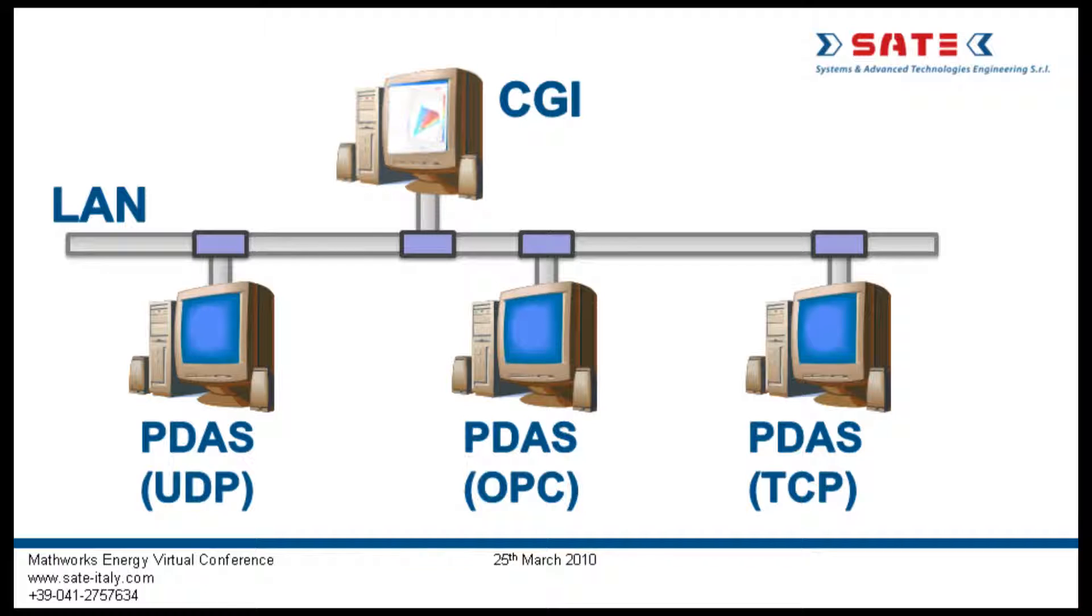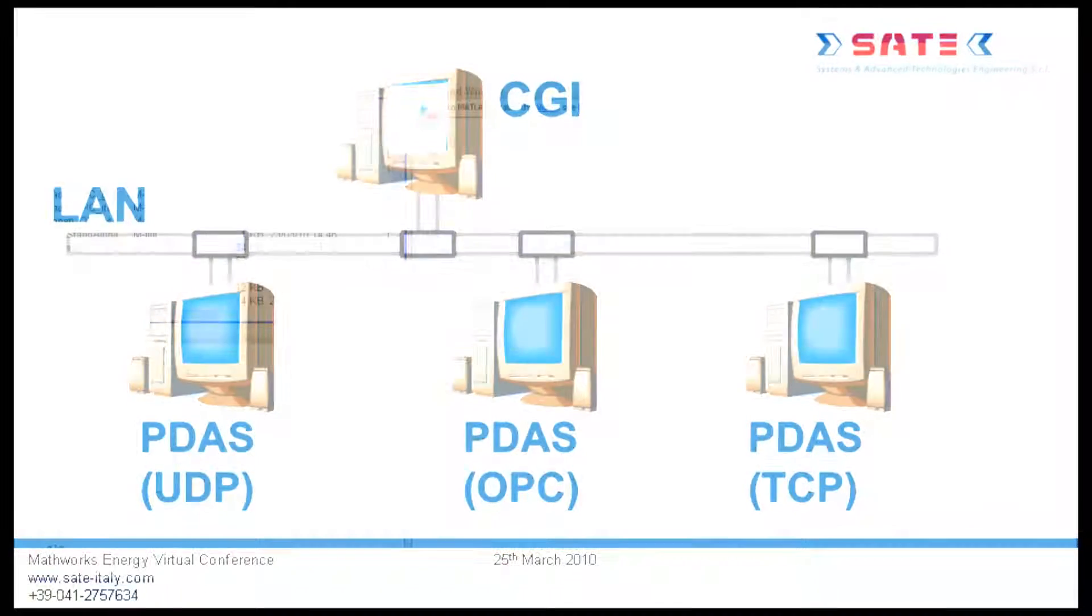The CGI receives the input data from the plant data acquisition system through the LAN network. Different communication protocols are supported: UDP, OPC, and TCP. In this video an example of compressor startup simulation will be played.